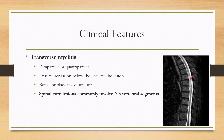One thing that may help you differentiate NMO from multiple sclerosis is that these spinal cord lesions commonly involve three or more vertebral segments — these are called longitudinally extensive lesions. The lesions are also typically more complete lesions of the spinal cord compared to multiple sclerosis, which may incompletely affect the level of the spinal cord.